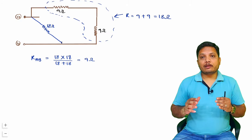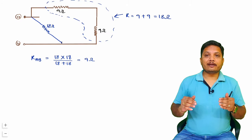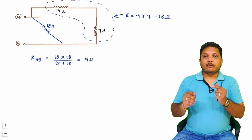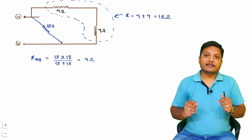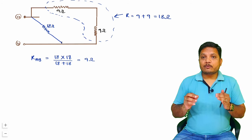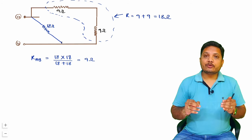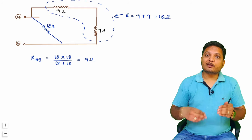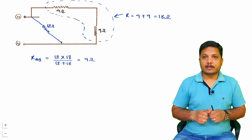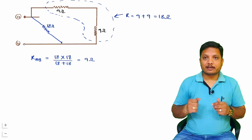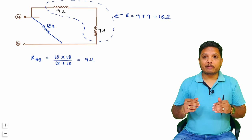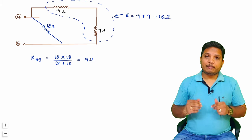This is how we resolve equivalent resistance step by step: first check for series and parallel combinations, and if none exist, apply star to delta or delta to star conversion for further simplification. I hope you understood this. If you have further queries, please place them in the comment box — I will be happy to help.